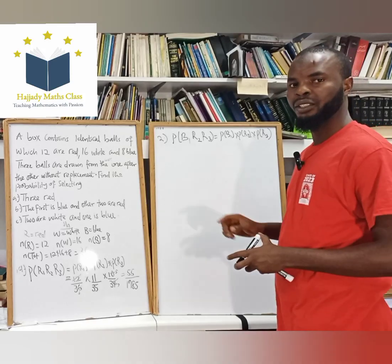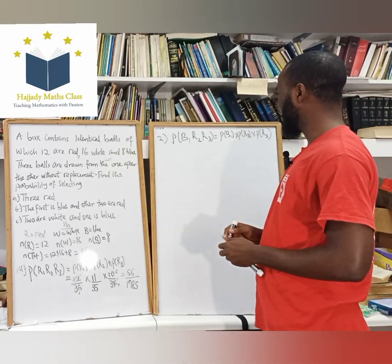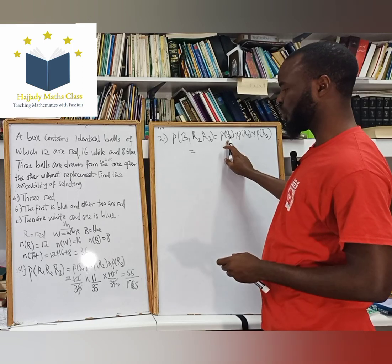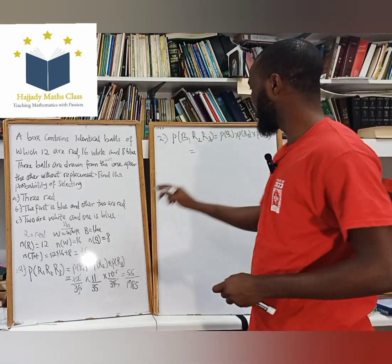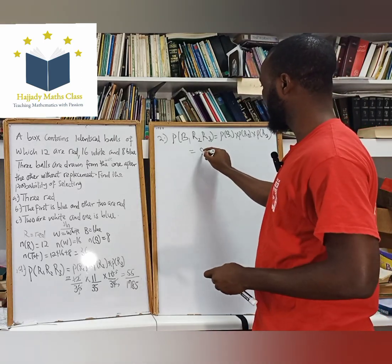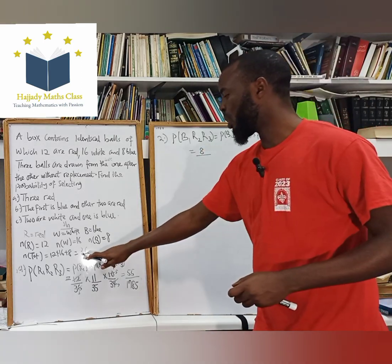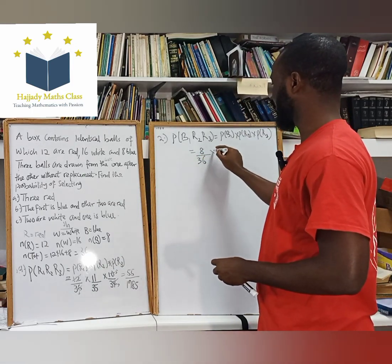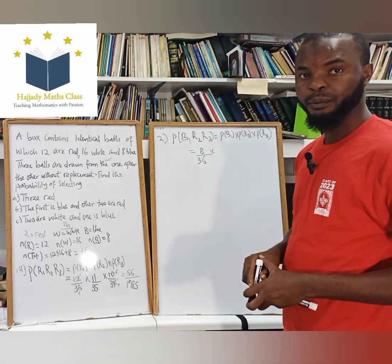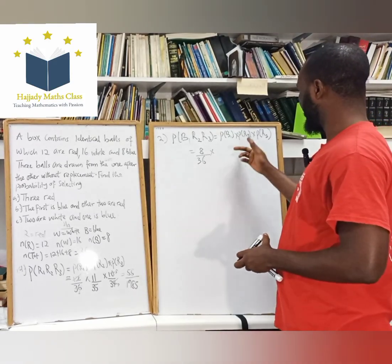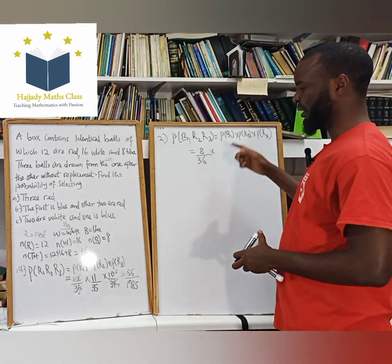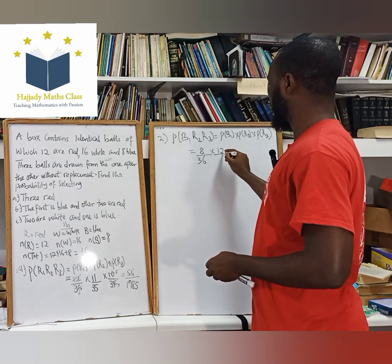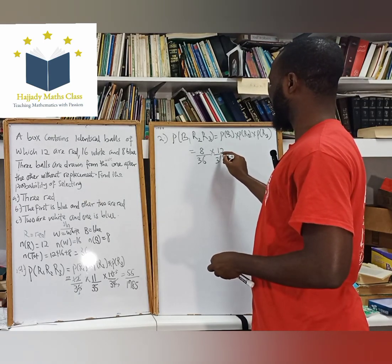Please pay attention to this. Looking at this, the probability of blue: we have the number of blue, which is 8, over the total number of balls, which is 36. For the first red ball: number of red is 12 over total, which is 36.